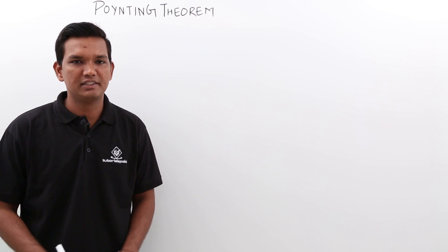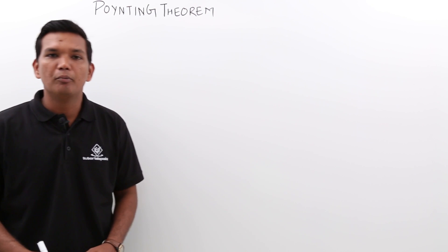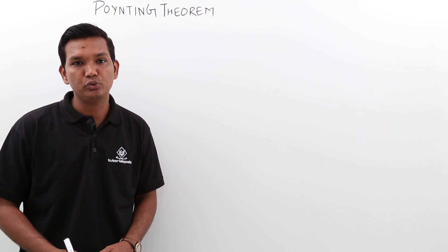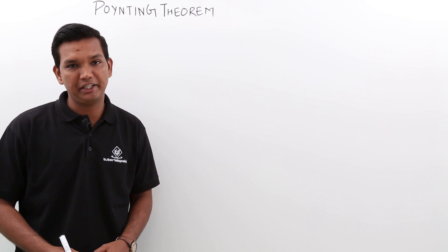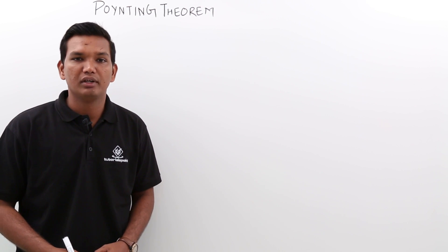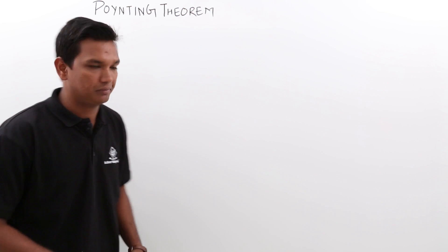In this class, we will discuss the Poynting theorem. The Poynting theorem is used to find the electromagnetic power. Let us try to understand the equation.